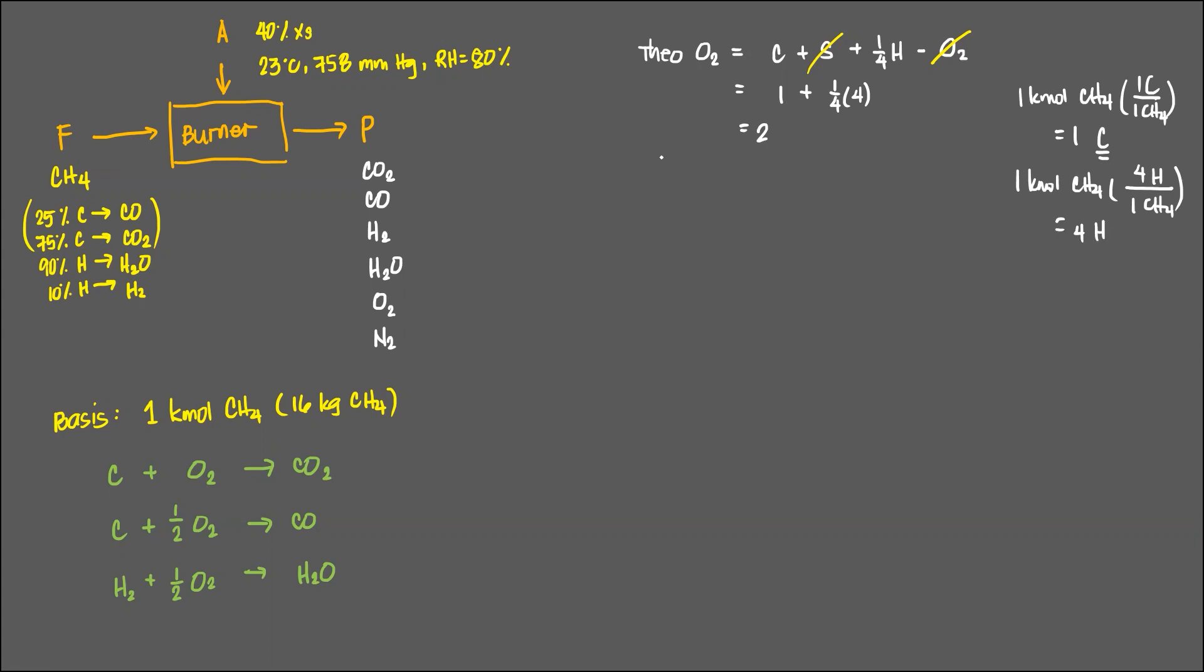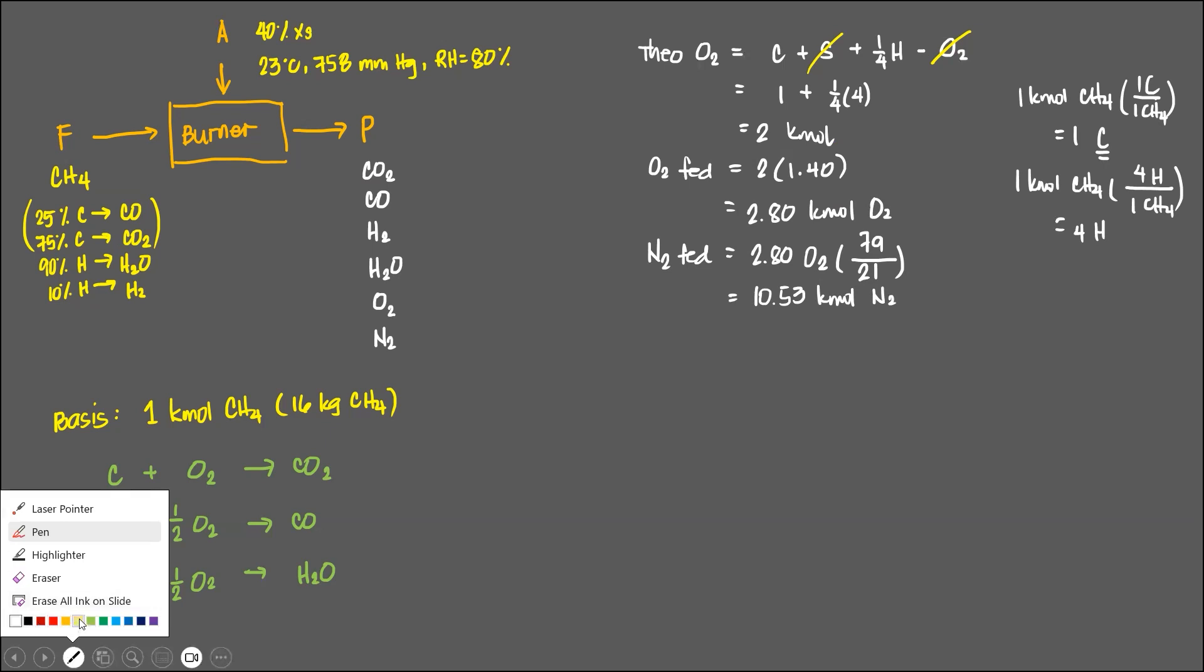The thing is, you are given 40% in excess. So, the amount of O2 fed is 2 times 1.40. That's 2.80 kilomoles. Now we know the O2. Let's determine the N2 fed. 2.80 kilomoles, the ratio 21/79. Can you please solve this for me? 10.53 kilomoles of N2.